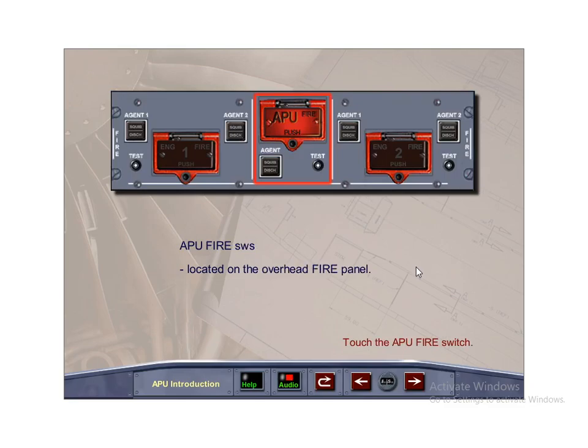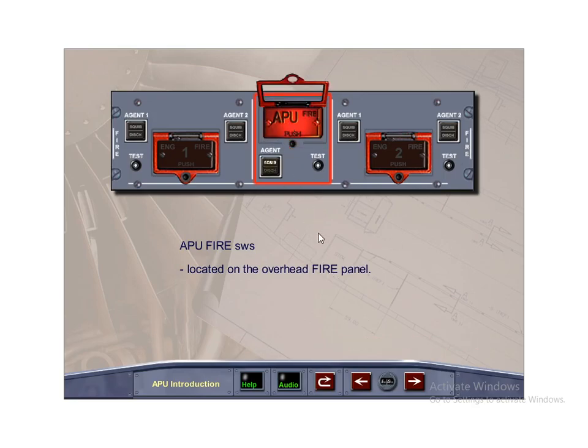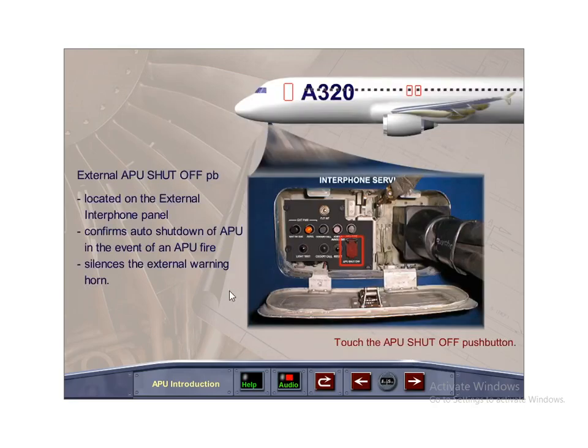The APU fire protection-related switches are located on the overhead fire panel. Pressing the APU shut-off push-button on the external interphone panel confirms APU shutdown and silences the external warning horn in the event of an APU fire.